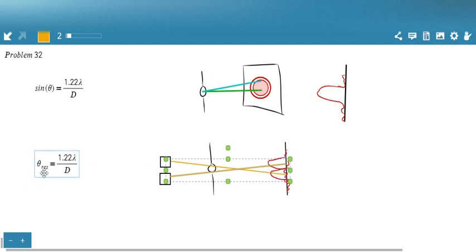A smaller resolution limit is a more powerful camera that could distinguish, or microscope that could distinguish between two objects. So the lower the resolution limit, the better the microscope or the optical device that you're using here.